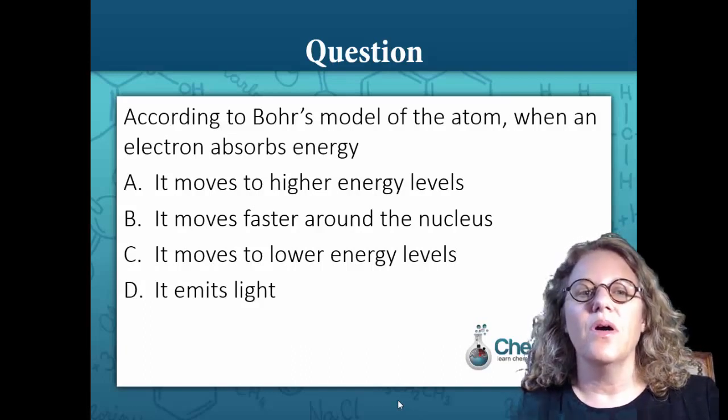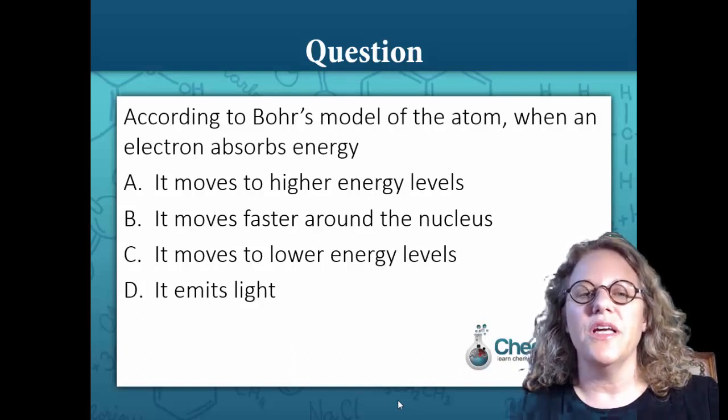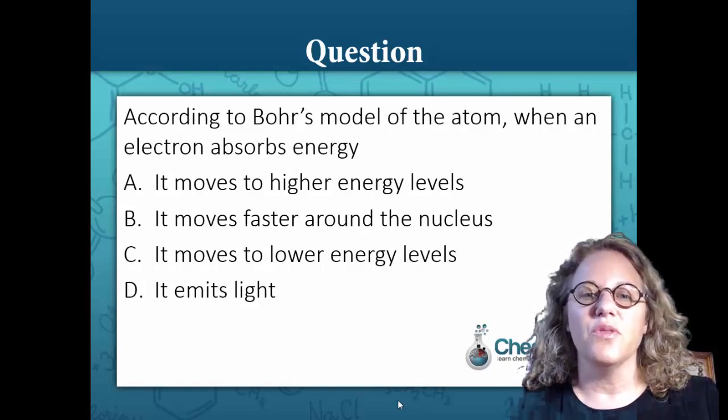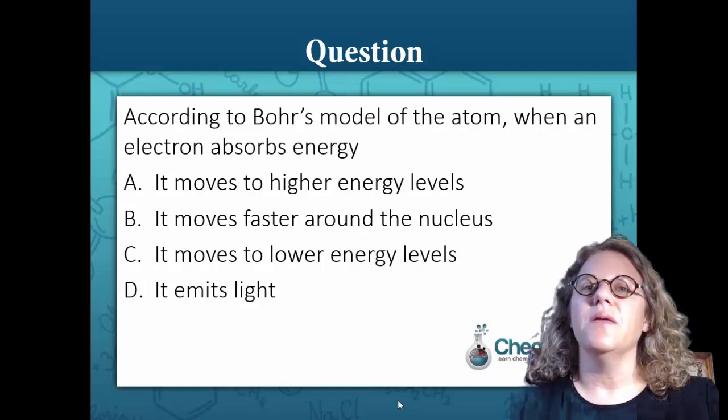According to Bohr's model of the atom, when an electron absorbs energy, it A moves to higher energy levels, B moves faster around the nucleus, C moves to lower energy levels, or D emits light.